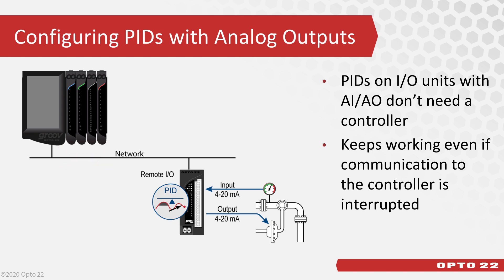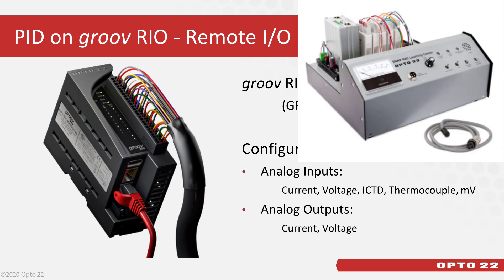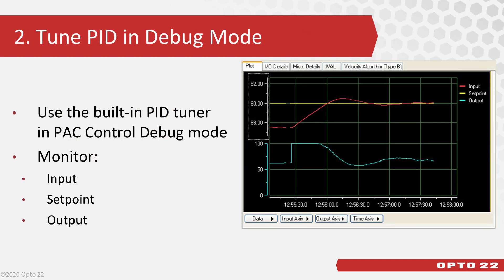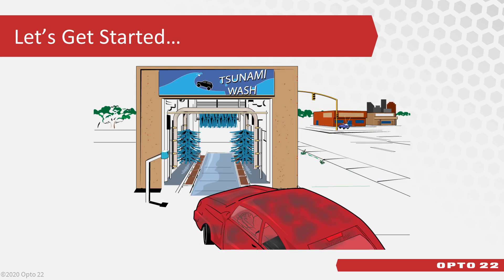We'll go over configuring a PID on a remote IO unit — I'll use a Groove Rio for this exercise, but it's the same concept if you're using SnapPak brains or SnapPak R controllers and their IO. If you have a SnapPak Learning Center, your ICTD probe has a resistor wired to an analog output point. After you configure your PID, we'll download the strategy, run it, and start using the built-in PID tuner in debug mode. We'll also go over several resources available to help you tune your PIDs, including the Opto forums and a PID tuner to help calculate those P, I, and D terms. Let's get started.